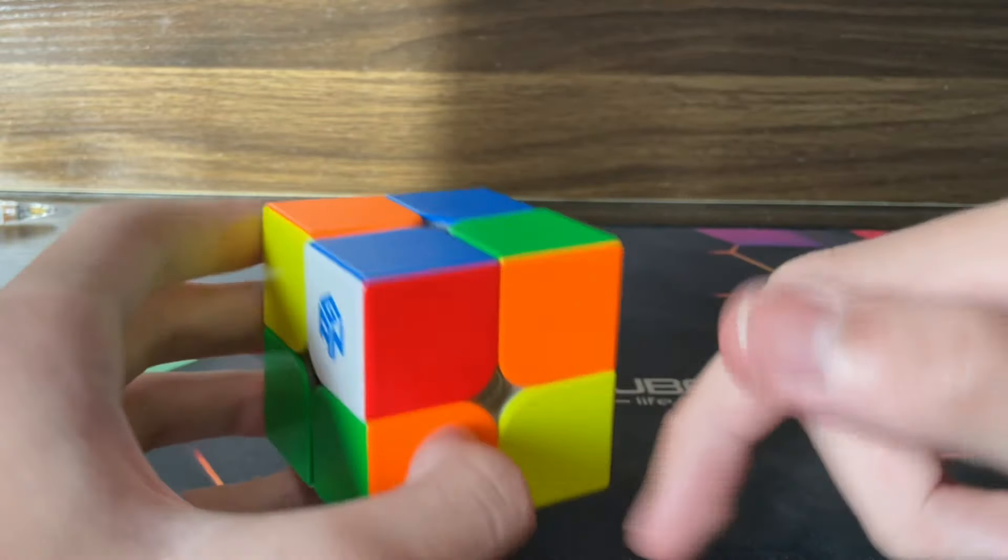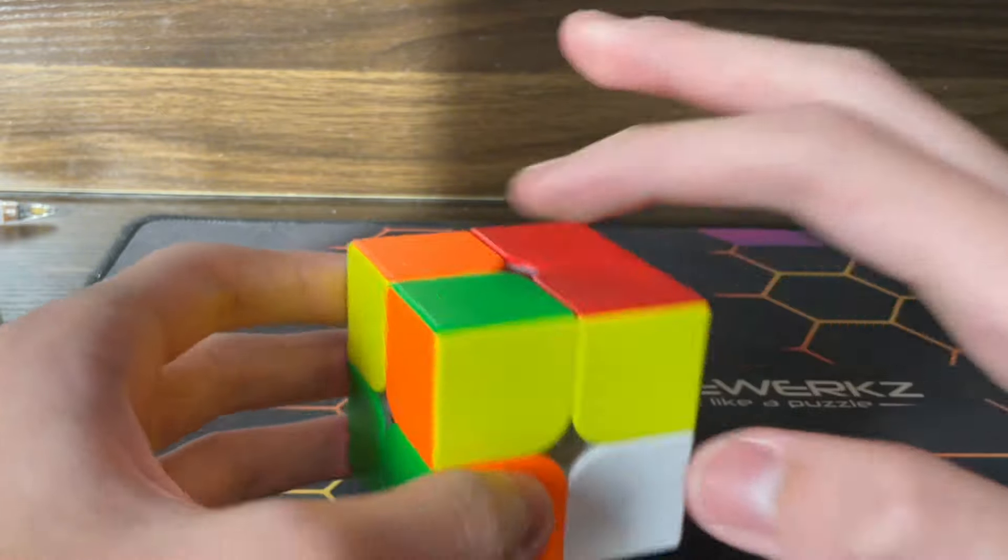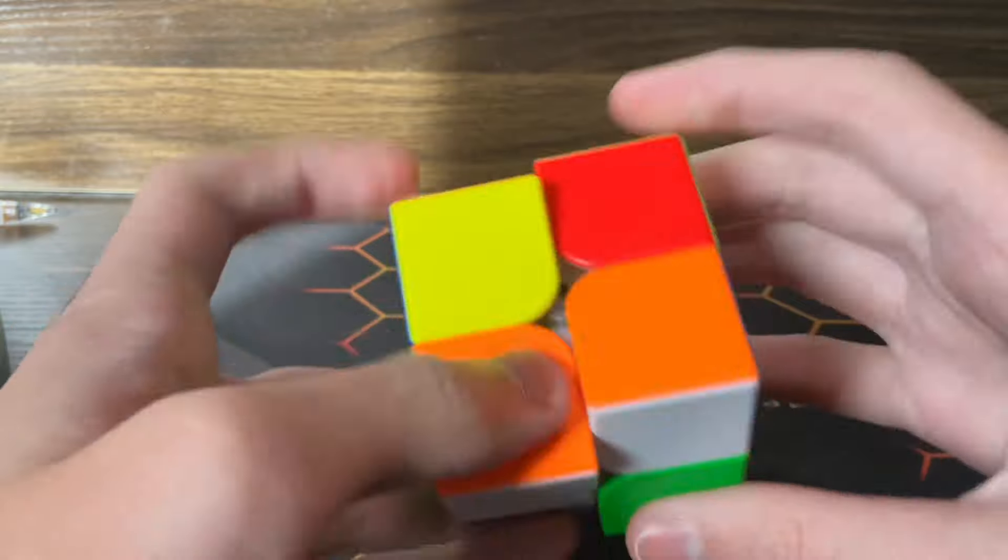The optimal solution here is this premade EG1 LS but you do five moves like this into this TCR and you can cancel into it so you just do R prime U prime R U R prime U prime R2 F R F prime U.